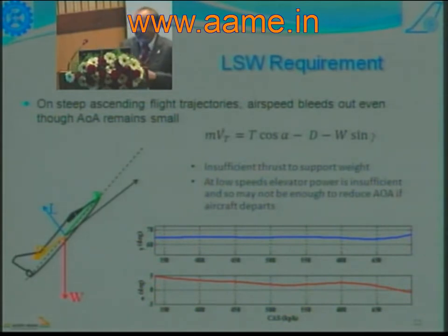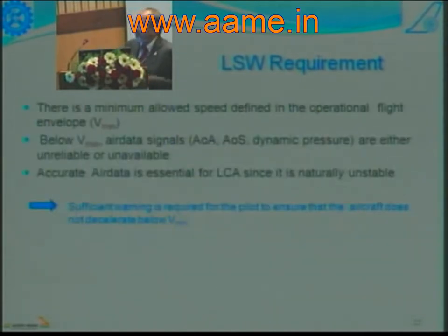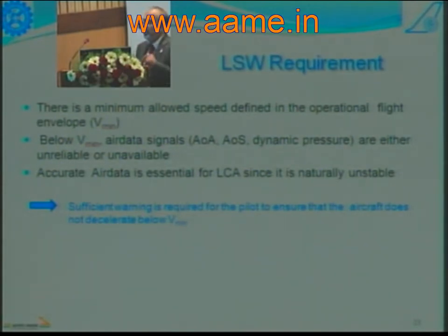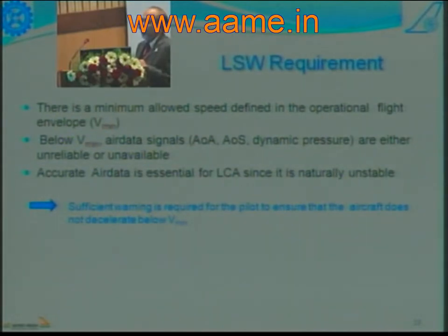This may sound very simple when said in words, but when it comes to implementation there are a lot of complexities. Especially at very low speeds, your air data signals — which are used to detect what is the model of the aircraft at any instant of flight time — also become unreliable. For such aircraft, air data becomes crucial, so it is very important that you don't allow the aircraft to drop in speed below a certain value called Vmin.